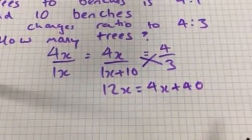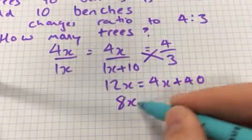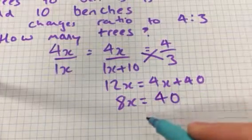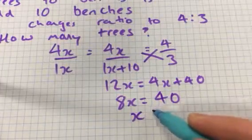And then take away 4x from both sides. So we've got 8x equals 40, and then you do 40 divided by 8, which will give you 5.